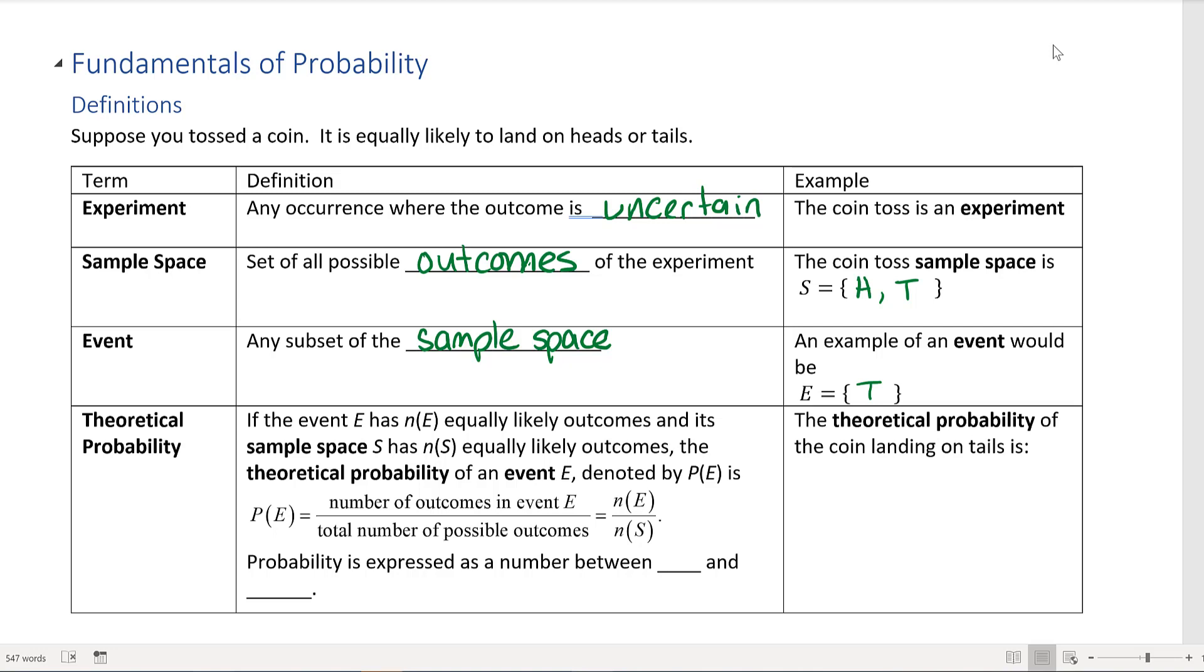...the number of outcomes in the event n(E) over the total number of possible outcomes n(S). The probability is a number expressed between 0 and 1.